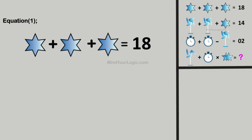Initiating with equation 1. Star plus star plus star equals 18. On simplifying, we get the value of the star as 6.